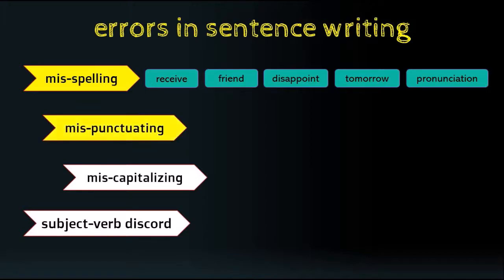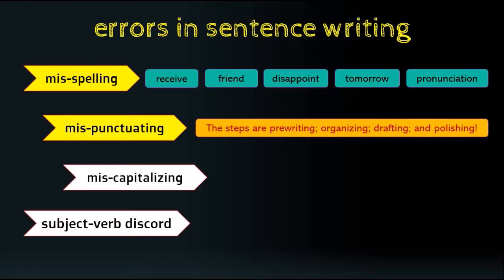The second error is mispunctuating — the wrong use of punctuation. There are several kinds: the period, comma, colon, semicolon, exclamation mark, question mark, etc. When punctuation is placed in the wrong position, it prevents readers from understanding the meaning and causes misunderstanding. For example, 'The steps are pre-writing; organizing; drafting; polishing!' is wrong — for a list you use commas, and since it's a declarative sentence, end with a period.